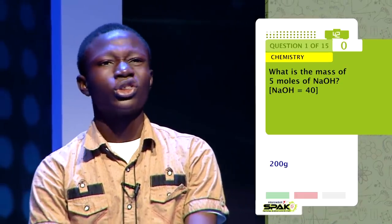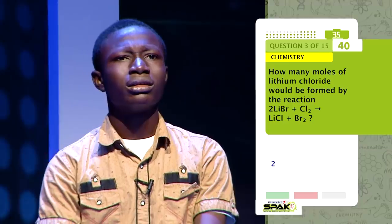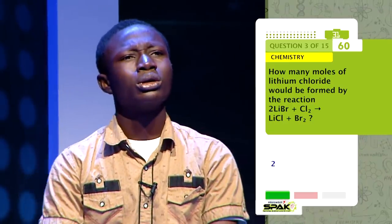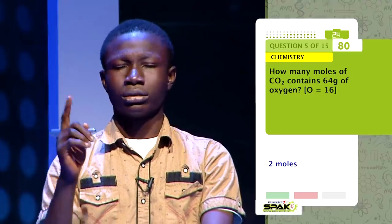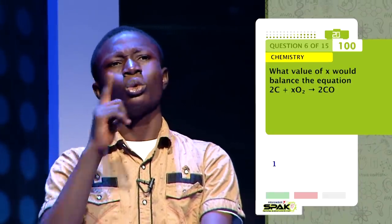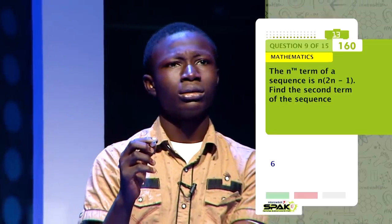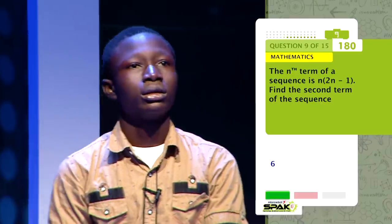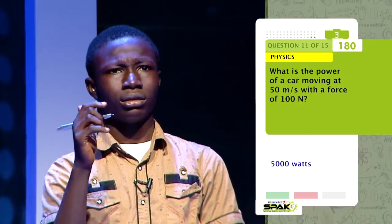Right after Anita, my most interesting moment in this episode happened when Oluwatobi Ojo gave correct answers to almost all his questions. What is the mass of 5 moles of NaOH? 200. What is the product obtained from the complete hydrogenation of alcohol? Alkane. How many moles of lithium chloride will be formed in the reaction 2LiBr plus Cl2 gives...? 2. What is the most abundant rare gas in the atmosphere? Argon. How many moles of CO2 contains 64 grams of oxygen? 2. What value of X would balance the equation 2C...? 1. The nth term of the sequence is N into 2N minus 1 — find the second term. 6. What part of the lens does a ray of light pass through undeviated? Focus. What is the power of a car moving at 15 meters per second with a force of...? 5,000.